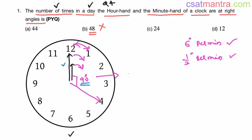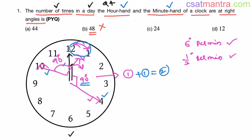Between 12 and 1, at some point the minute hand will make a 90-degree angle with the hour hand — that's one possibility. After some more time the minute hand moves further and again the angle between them will be 90 degrees, so there are two right angles between 12 and 1. From this you might directly say for every hour they meet at two right angles — so 24 hours × 2 = 48 — but this is incorrect.